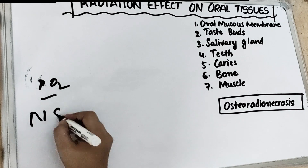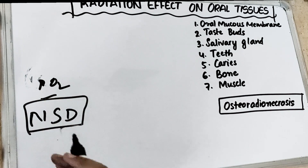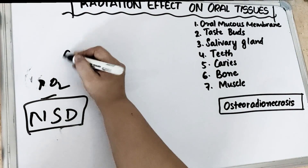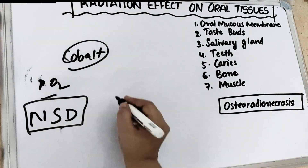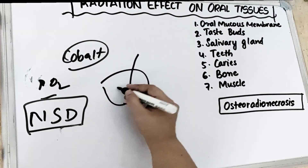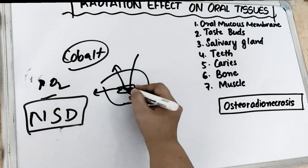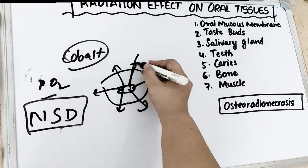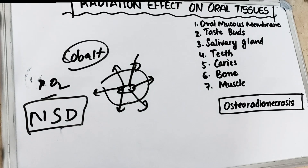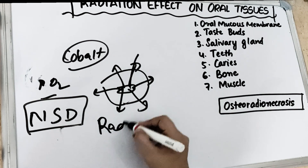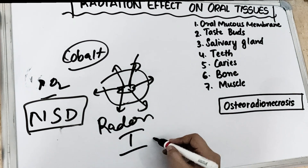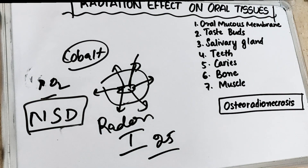There is something known as nominal standard dose. The source of radiation we give for radiotherapy is cobalt. As an implant material, in the case of a tumor we can implant radioactive material which will scatter radiation. This implant material can be radon or iodine-125 — all radioactive materials we can use for radiation therapy.